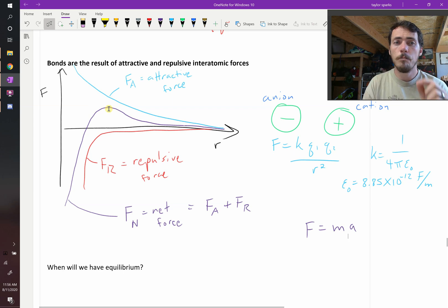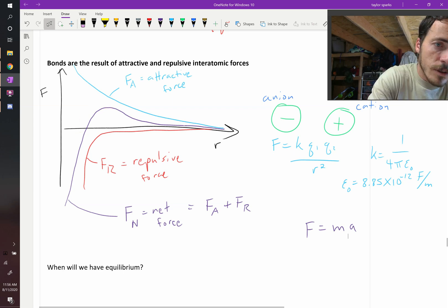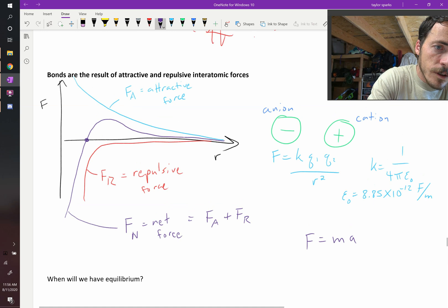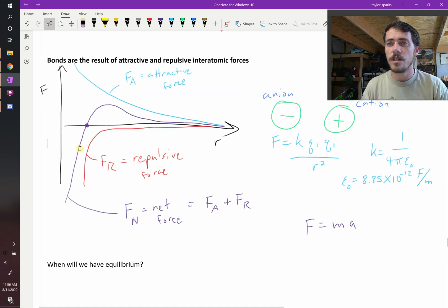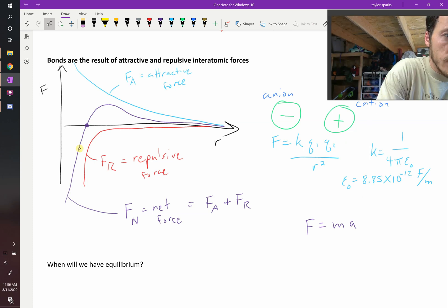But when it has zero force—right here, when there's zero net force acting on it—it is at equilibrium. By definition, it's at equilibrium. So we have a special name for that point right there, this distance right here.